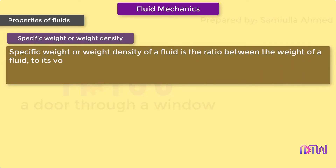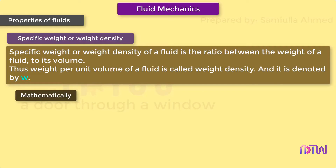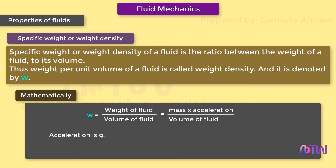Specific weight or weight density of a fluid is the ratio between the weight of a fluid to its volume. Thus, weight per unit volume of a fluid is called weight density, and it is denoted by small w. Mathematically, w is equal to weight of fluid divided by volume of fluid. Weight of fluid can be written as mass of fluid into acceleration due to gravity, divided by volume of fluid.